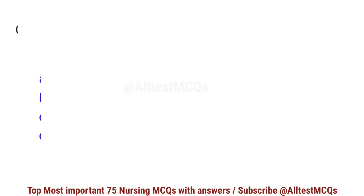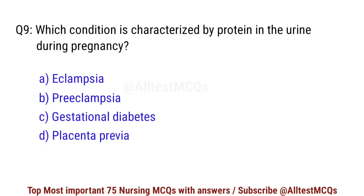Question number 9. Which condition is characterized by protein in the urine during pregnancy? Right option is B: Preeclampsia.